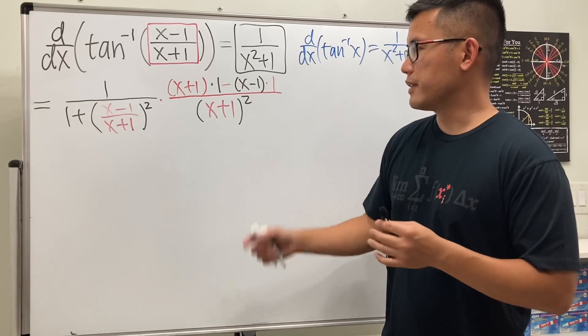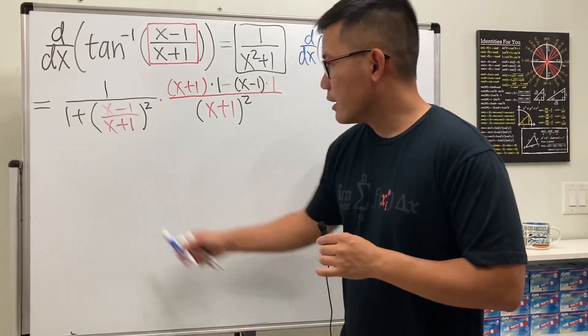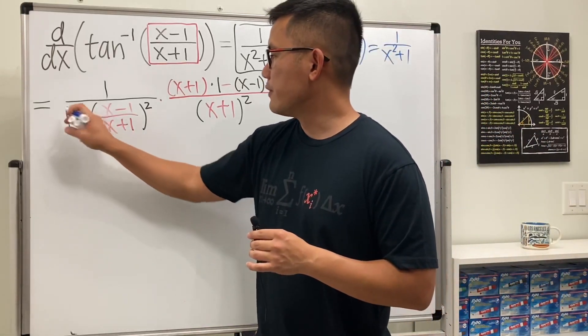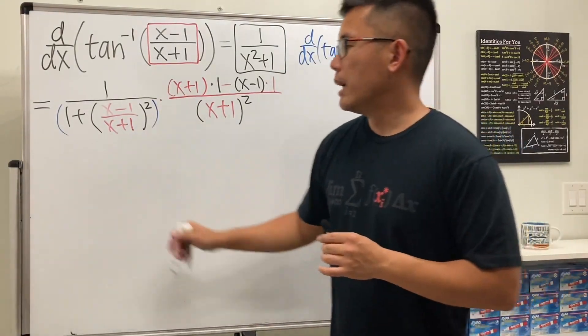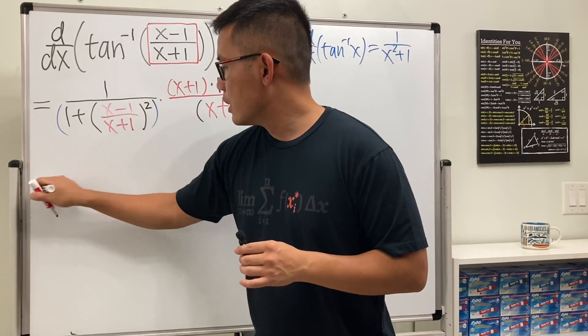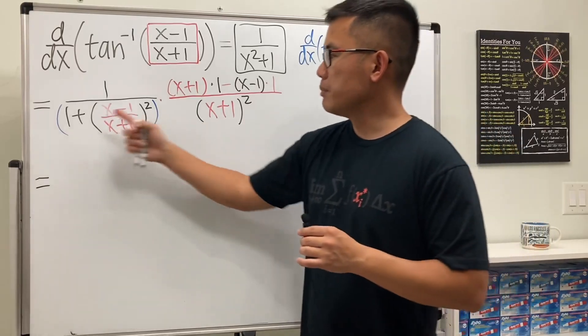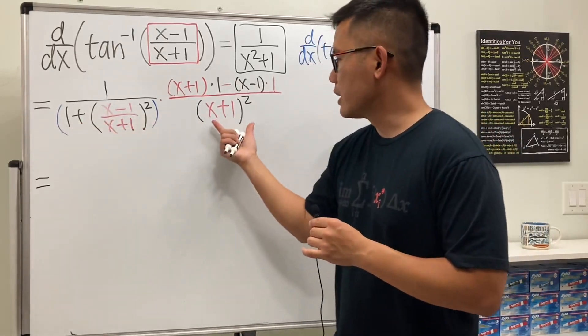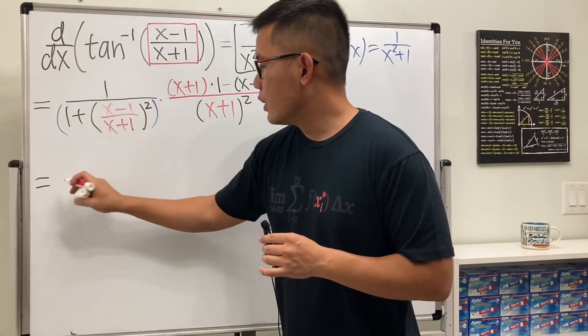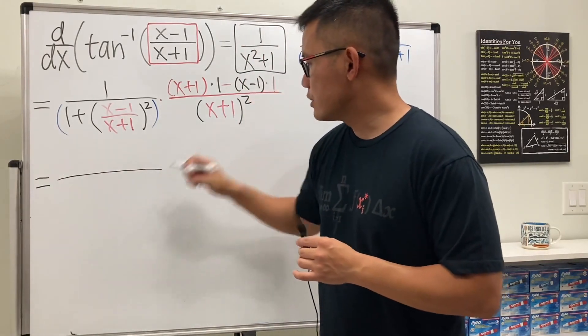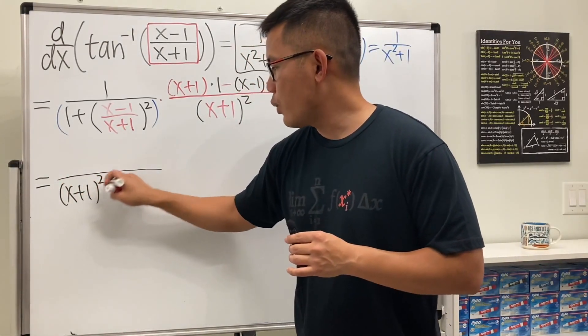So, this is pretty much it, and the rest is just simplification. So, here's the deal. This is the whole denominator for the first fraction, so let's put parenthesis, because we'll just take this, multiply, multiply. So here, when we do this times that, we have, let's just keep this for now, so x plus 1, square.